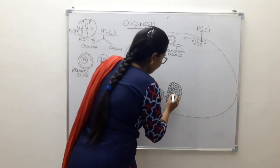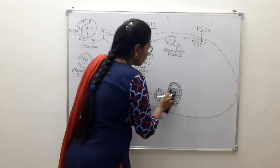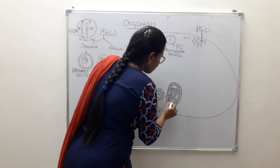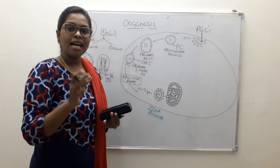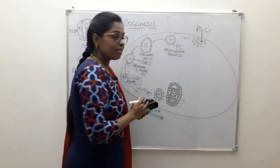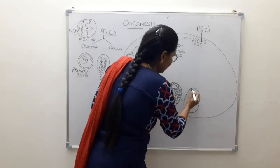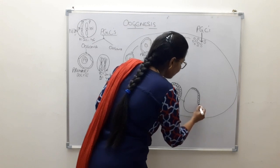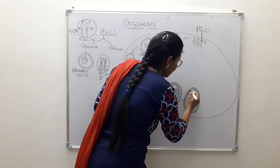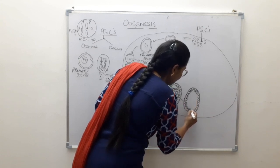The zona pellucida lies between the follicular cells and the oocyte. Fluid-filled spaces then appear within the follicle — this is called the antrum folliculi, and the fluid is called liquor folliculi. In the next stage these spaces enlarge abundantly, eventually forming a single large cavity.